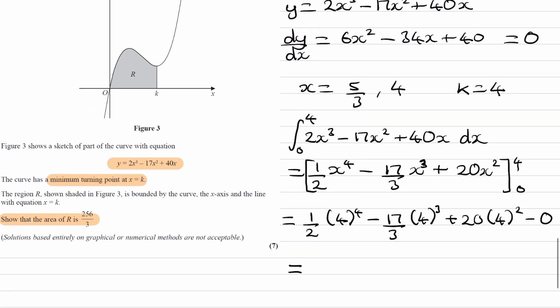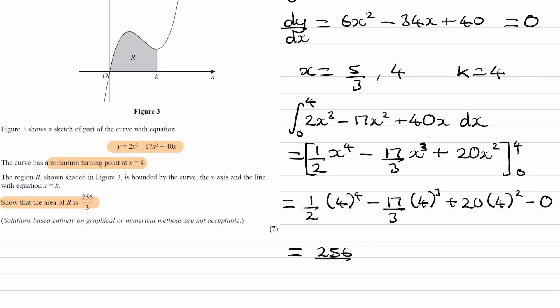Type this into your calculator, and you will end up with 256 over 3, which is the final answer.